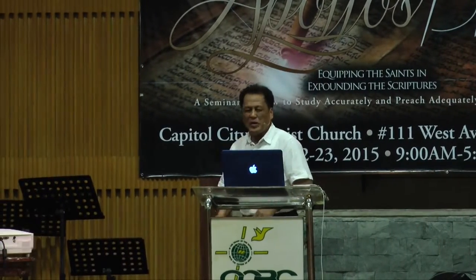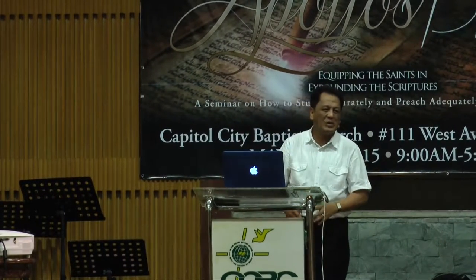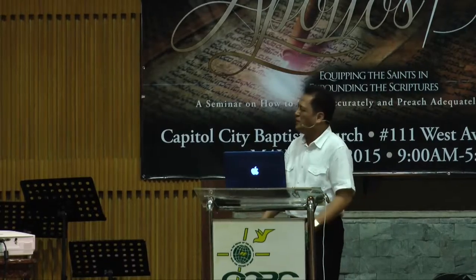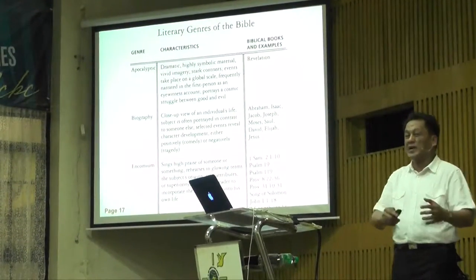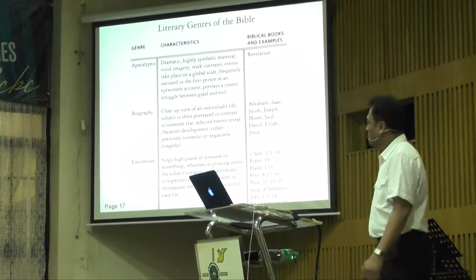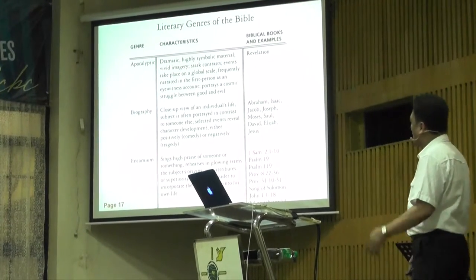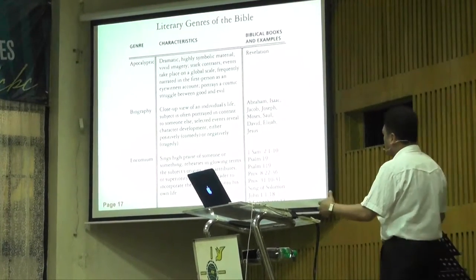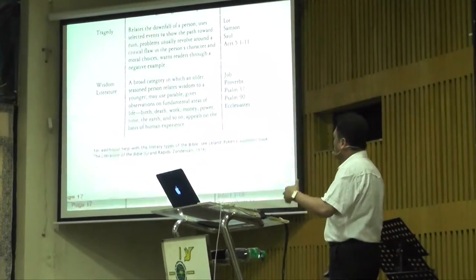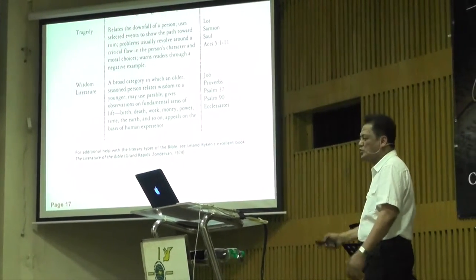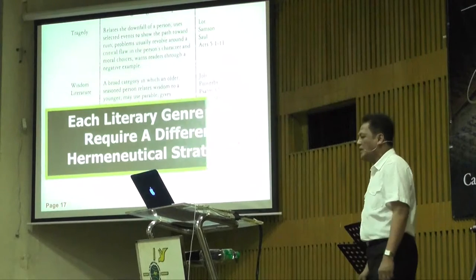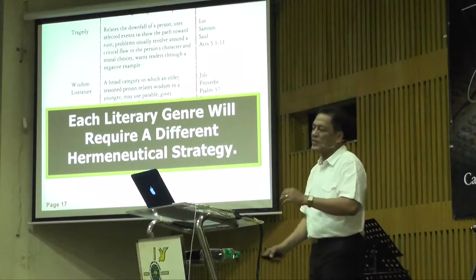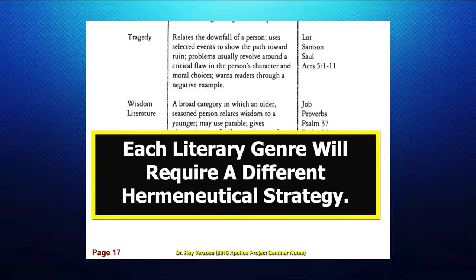We have 66 books in all of the Bible, and depending on the type of genre, it will require a different hermeneutical approach. You have apocalyptic material, biography, tragedy, wisdom literature. Each literary genre will require a different hermeneutical strategy.